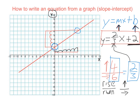To recap: I looked for where the line crosses the y-axis — that's my b, my y-intercept, which goes at the end of the equation. Then to find the slope, I picked two points that are right on the corners of the grid, and I calculated how high I had to go divided by how far across I had to go. And that is how you write a slope-intercept equation from a graph.